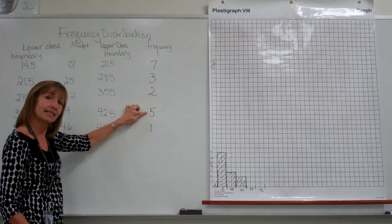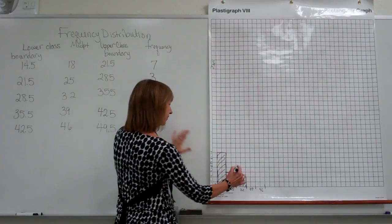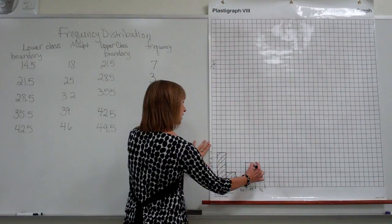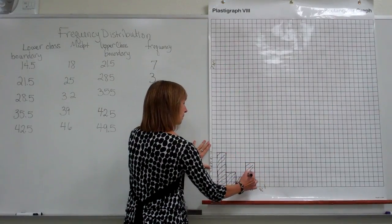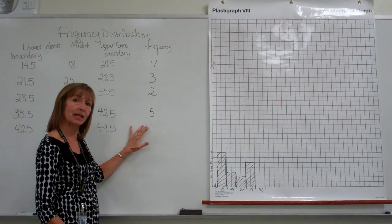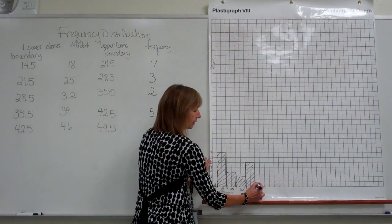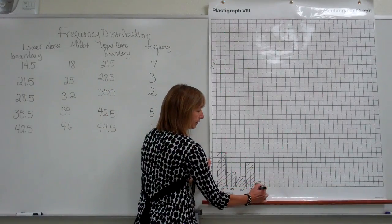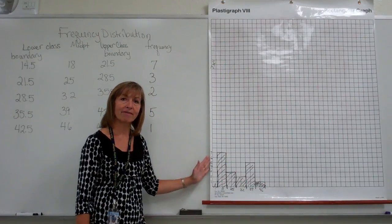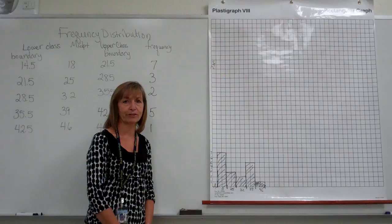For the fourth class, our frequency was 5. So we have a height of 5 for our fourth class. And then our fifth class, we have a height of 1. And here is a histogram of the data values we had in that first video clip.